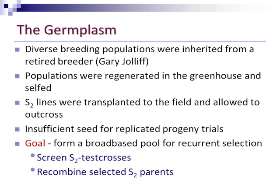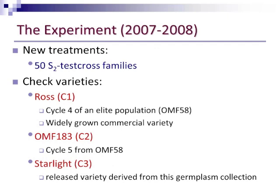The particular germplasm I was working with — this was in 2005 — I had inherited some diverse breeding populations from a retired breeder. We regenerated the seed in the greenhouse and selfed a large number of plants. After two generations, we had S2 lines, and we transplanted those lines to the field where they were allowed to outcross. This was the first time we had tried using an S2 test cross system in Metafoam, so we didn't have sufficient seed for replicated progeny trials. Our goal was to form a broad-based population for recurrent selection — to screen the S2 test crosses and select the best S2 parents for recombination.